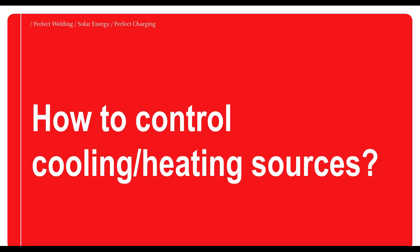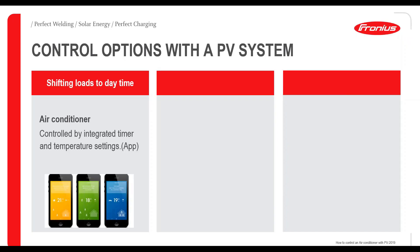Now let's look at how to control a cooling or heating source. There are three different types of controlling a climatic system such as an air conditioning system. First, there is the possibility to control the air conditioning system with a timer and temperature setting. For example, when the air conditioning system delivers an app you can use, you are always free to choose the temperature and a timer function. You can set the air conditioning system to activate during high radiation times, such as at 1 o'clock in the afternoon when there is lots of irradiation and high temperatures.